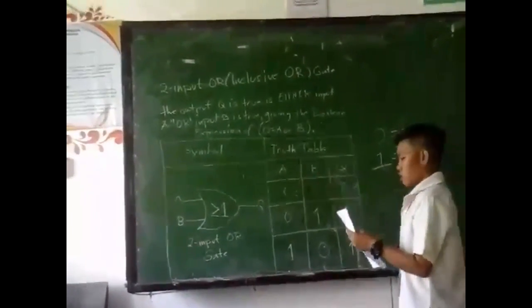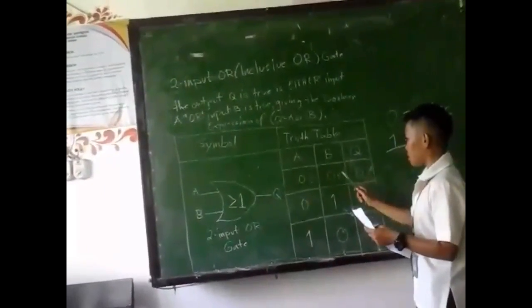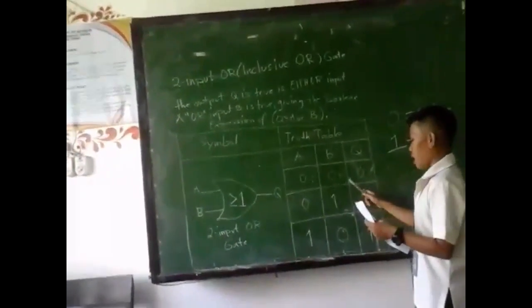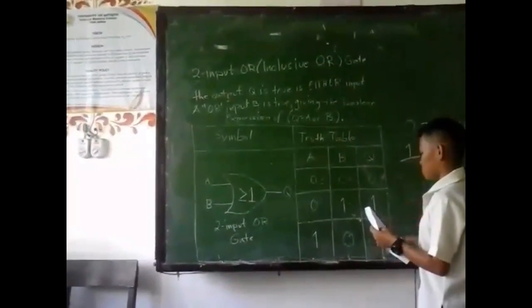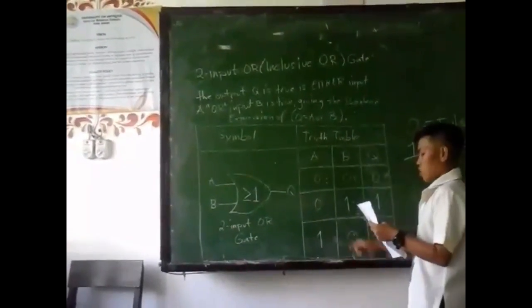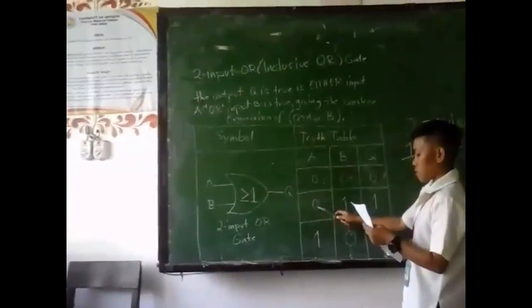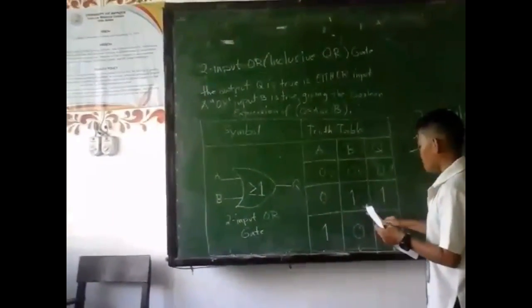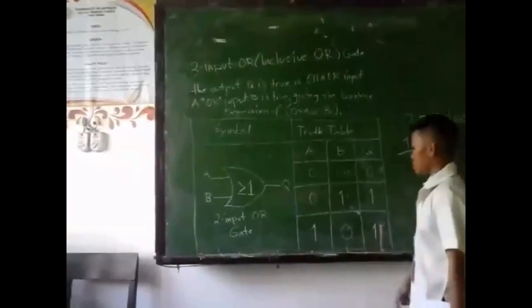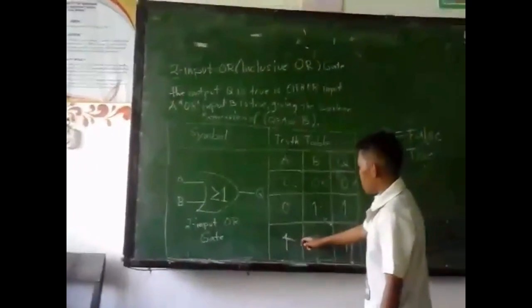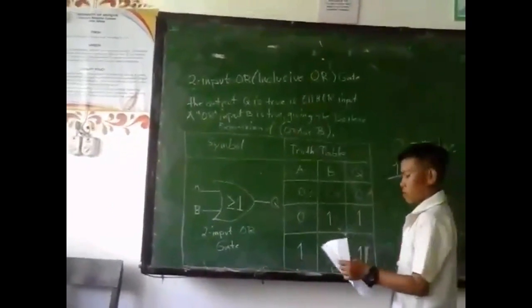If input A is 0 and input B is 0, the output is 0. If input A is 0 and input B is 1, the output is 1.